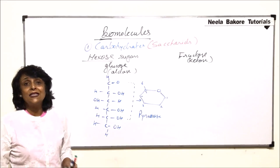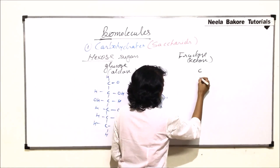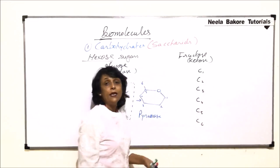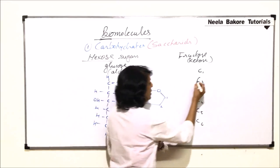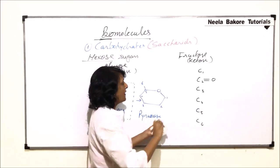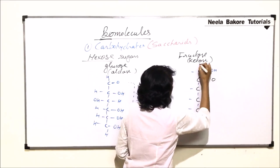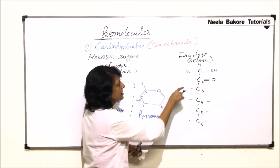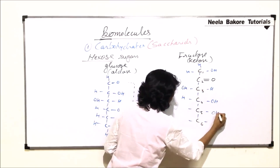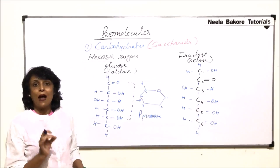In fructose, which is a ketose sugar, the ketone group is never on a terminal carbon — it is always on the sub-terminal carbon. So if we number six carbons one through six, the keto group is present on carbon two. All valencies must be satisfied, giving OH and H groups at the appropriate positions.